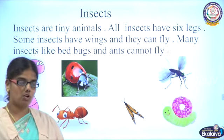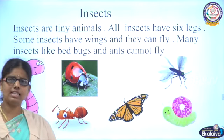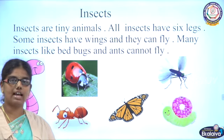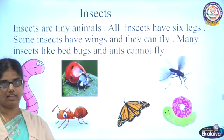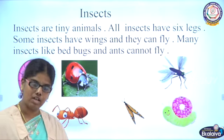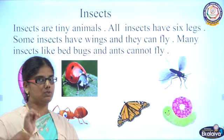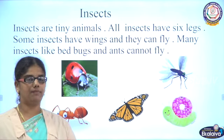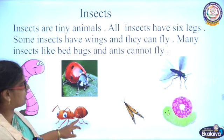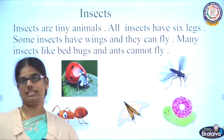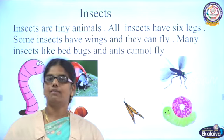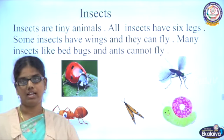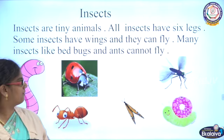Not all insects can fly. If you take an ant, it cannot fly — it moves slowly from one place to another. But a butterfly can fly. So some insects can fly and some insects cannot fly. Butterflies and mosquitoes can fly, but ants cannot fly.